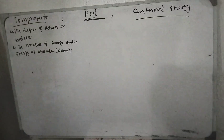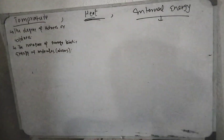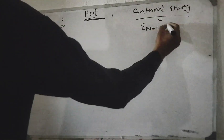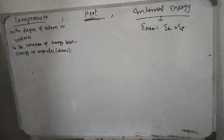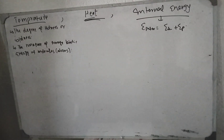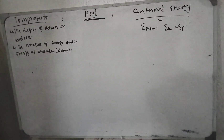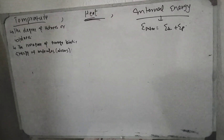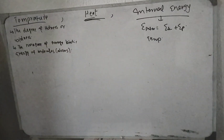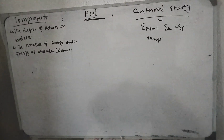Internal energy is the overall energy of a system. Internal energy is equal to the total kinetic energy plus the total potential energy of the molecules. This includes translational kinetic energy, rotational kinetic energy, and different potential energies. The internal energy depends on the temperature as well.